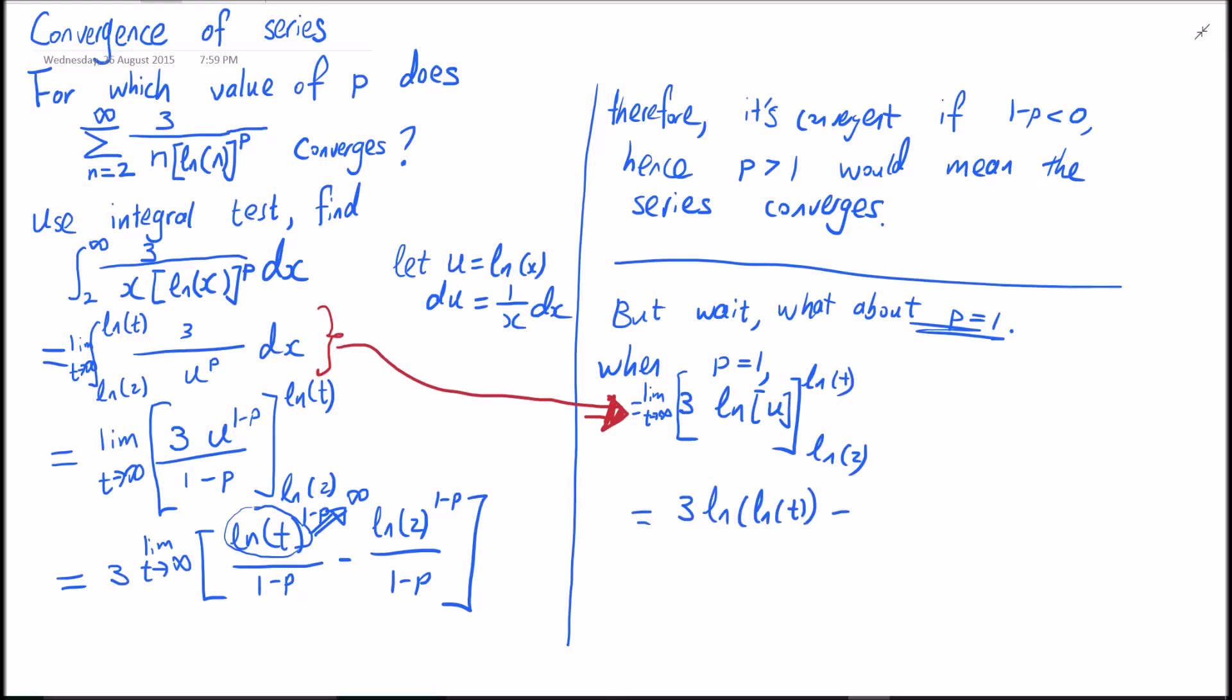This integral will become log of log of t minus log log of 2, times 3. This will go to infinity as t goes to infinity. Therefore, our series diverges.